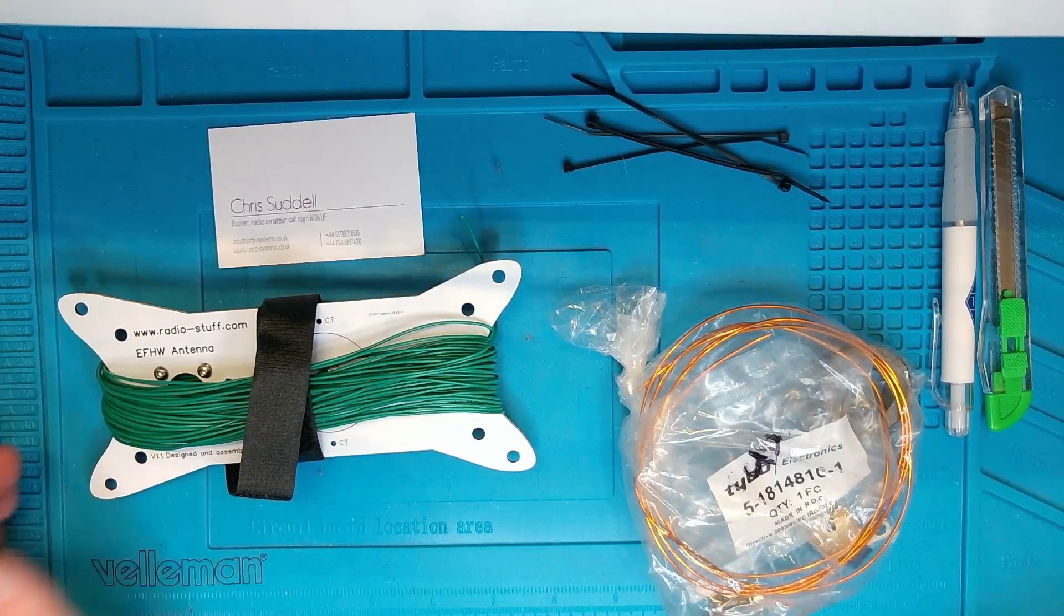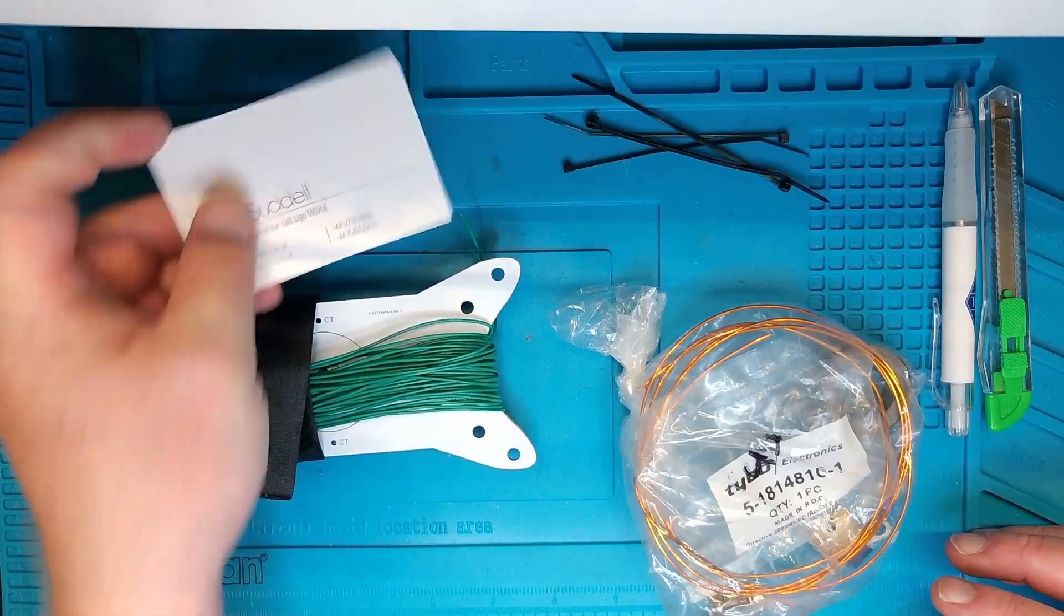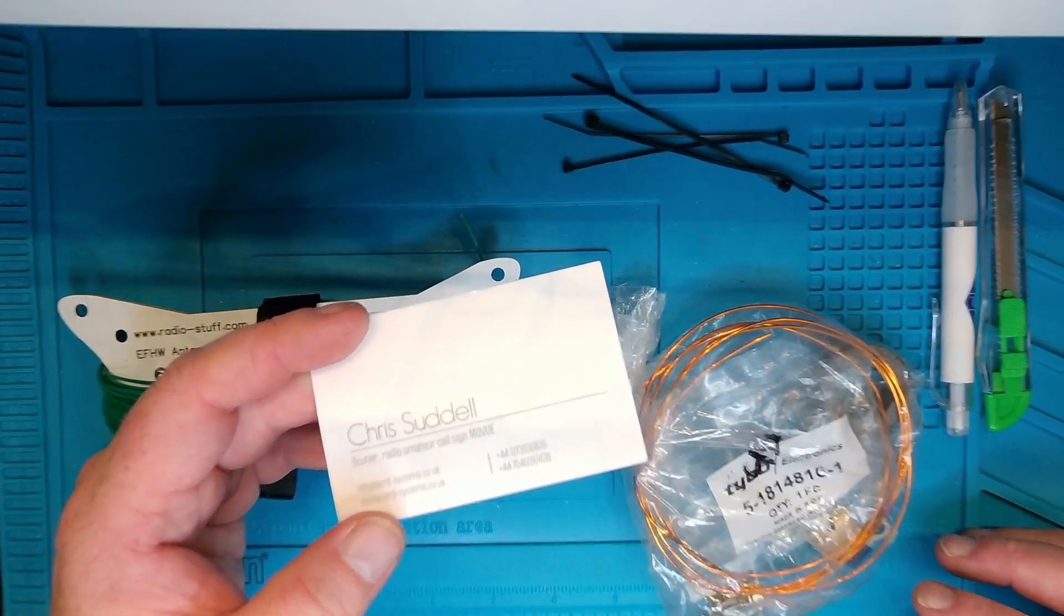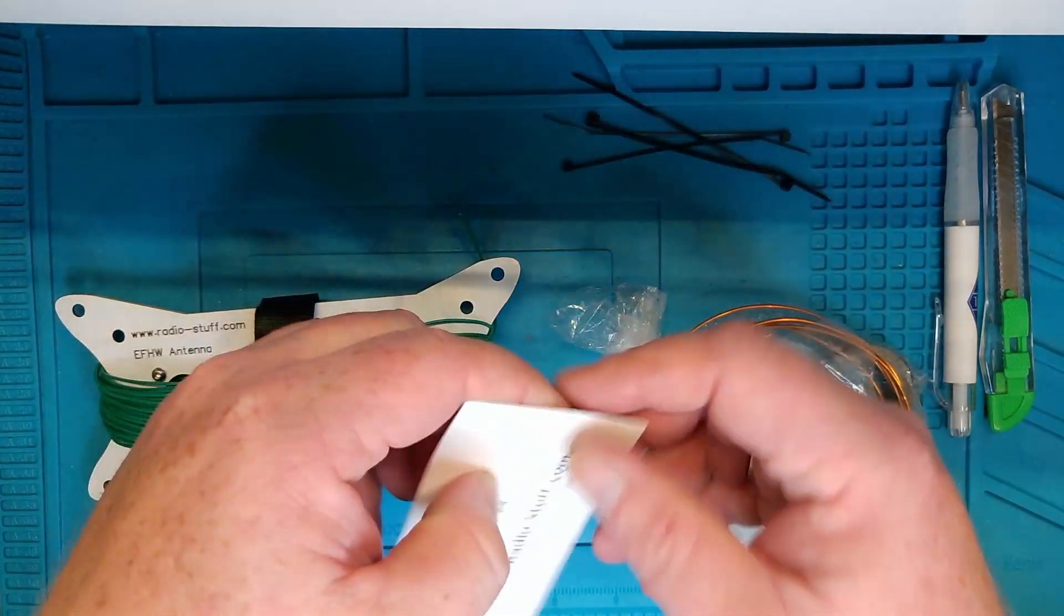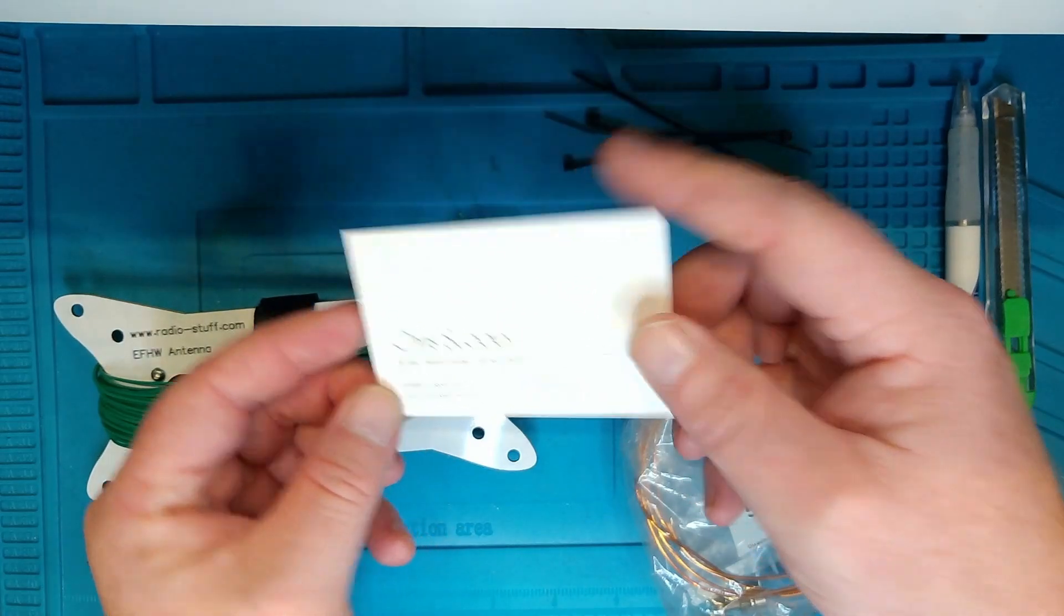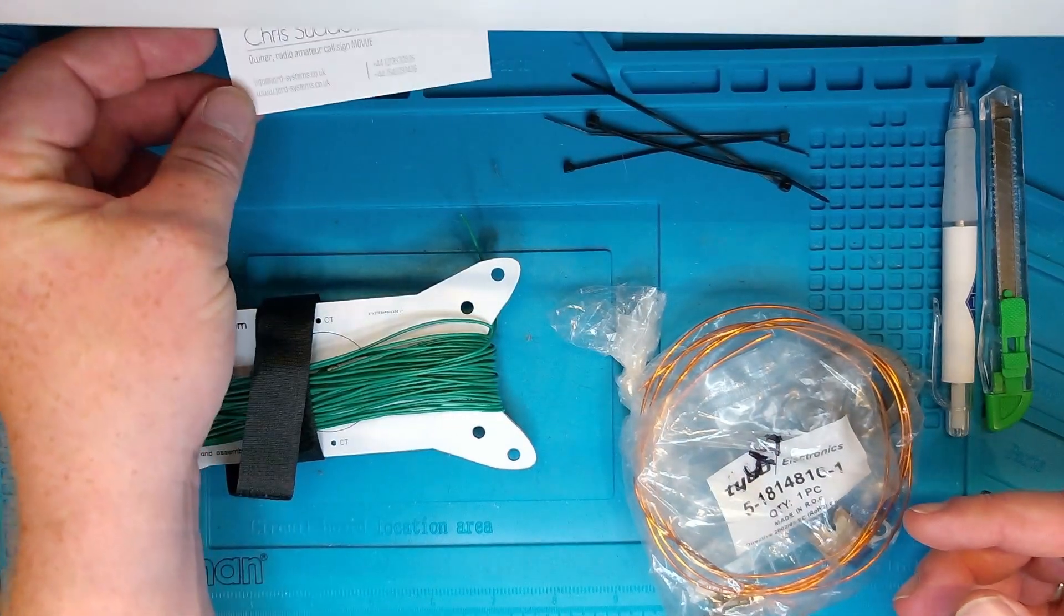I'm going to show you what's in the box, the build, and we'll be back in the studio in just a little bit. So let's take a look what's in the box here. First of all, you get the business card of Chris Siddell, M0 Victor Uniform Echo, and a link to RadioStuff.com.